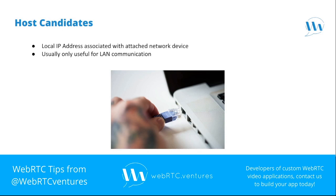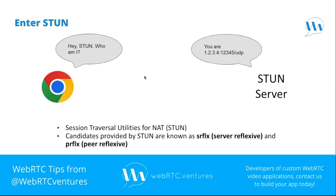Next, the ICE framework will search for the IP address and port provided by the NAT device that allows the peer to connect to the internet. This is done by making a request to an external server known as a STUN server. STUN stands for Session Traversal Utilities for NAT — a protocol that provides a way for a peer to know its public information. A peer will make a STUN request, and the server will reply with the public IP address where the request came from. A STUN server will usually reply with both UDP and TCP types of candidate pairs, although UDP should be preferred.